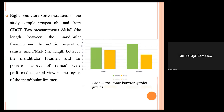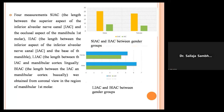Among the eight predictors, the value of AMAF for females was more compared to males, and PMAF values were less for females compared to males. Similarly, the values of SIAC and IIAC were both more in males compared to females. The values of LIAC and VIAC were also both more in males than in females.